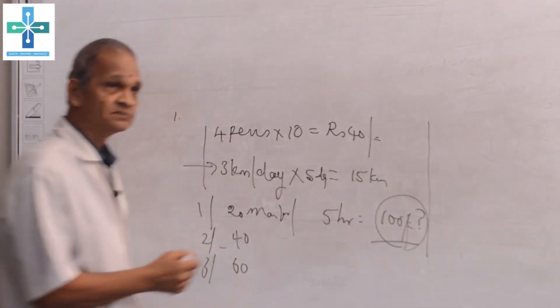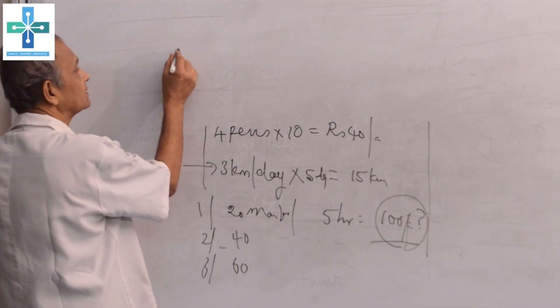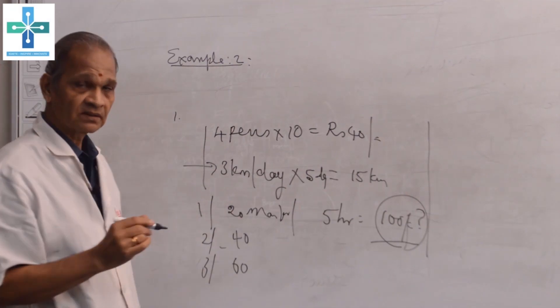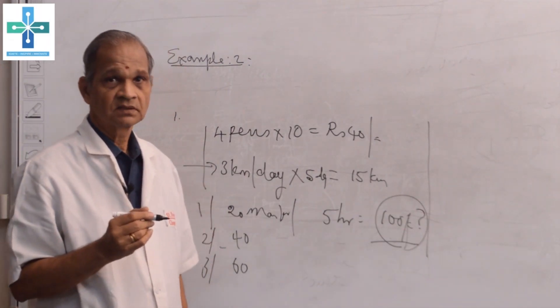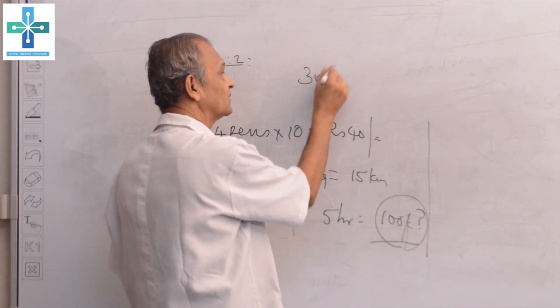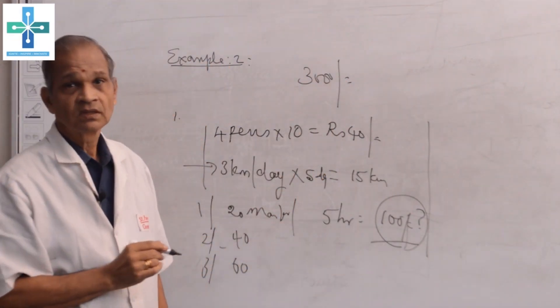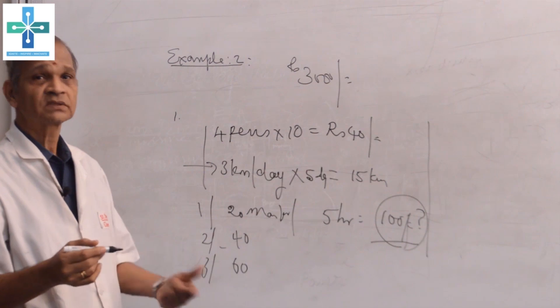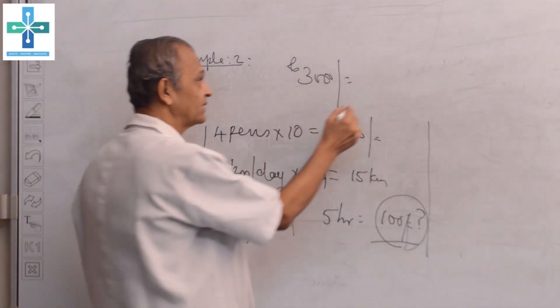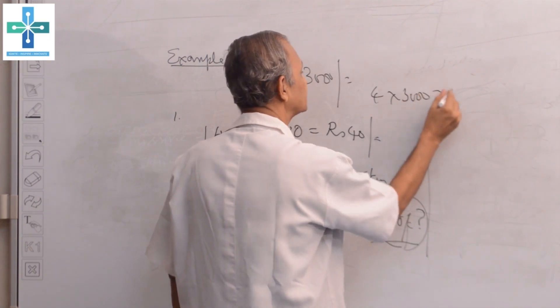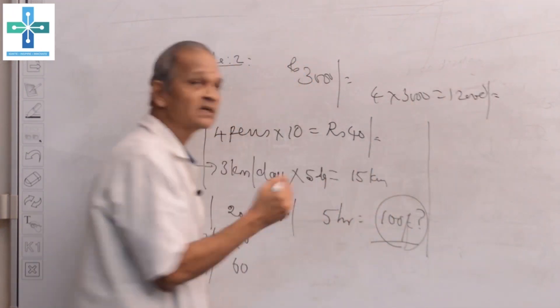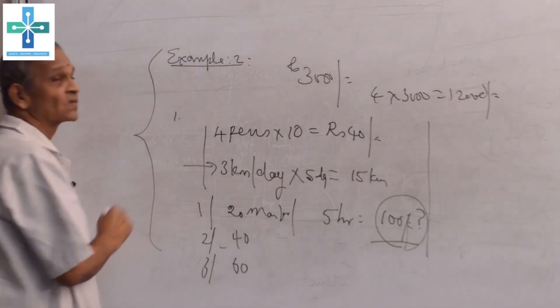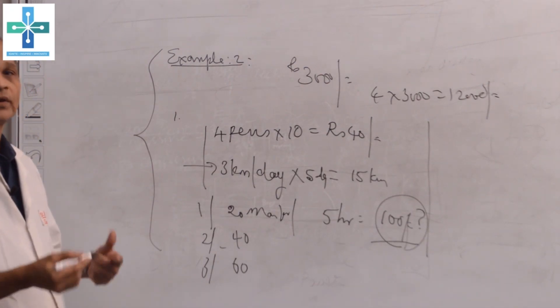Consider another example. A person is having a sweet stall and he is getting a daily profit of 3,000 rupees. Suppose if he starts 4 shops in the same state, whether he will get 4 into 3,000, 12,000 rupees profit per day? For these things, where we have the answer? How we are going to apply that?